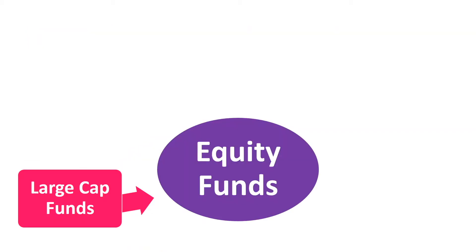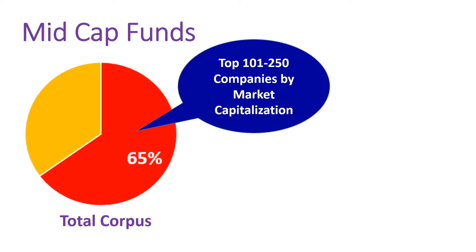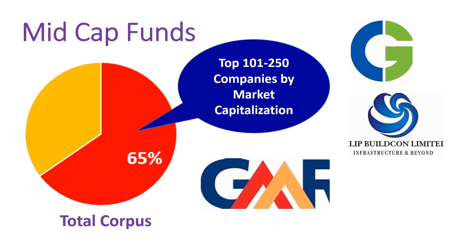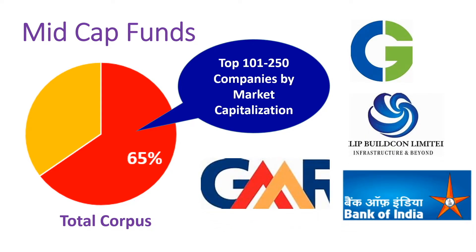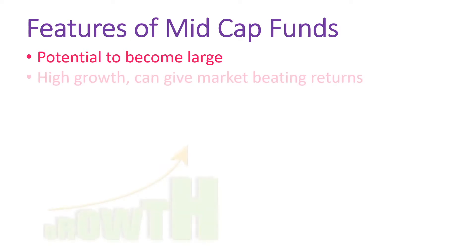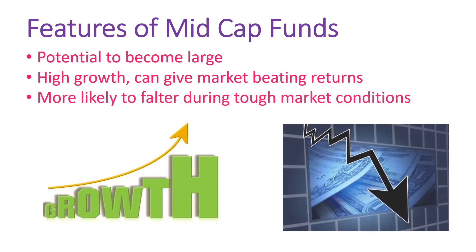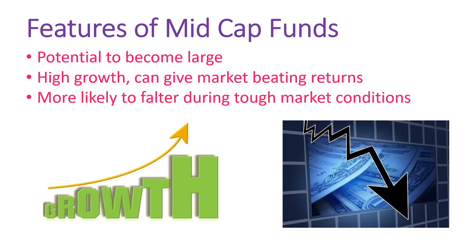Second is mid-cap. Mid-cap mutual funds are those that invest at least 65% of the corpus in companies lying between 101 to 250 by market capitalization. Examples include Crompton Greaves Consumer Electricals, Dilip Buildcon, GMR Group, Bank of India, etc. These companies have the potential to become large-cap companies in future years. They provide access to high-growth stocks that can give market-beating returns, though their smaller size makes them more likely to falter during tough market conditions.